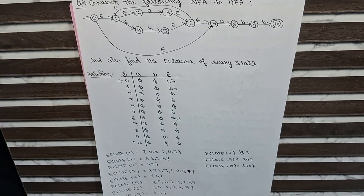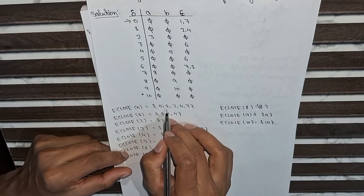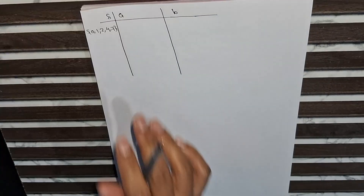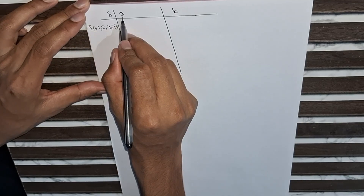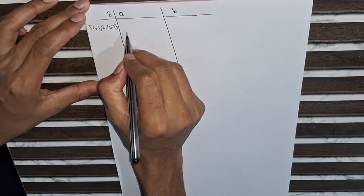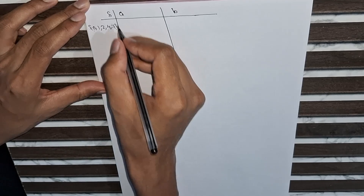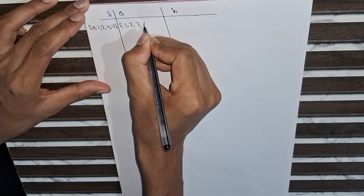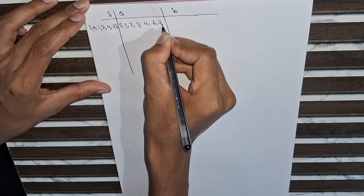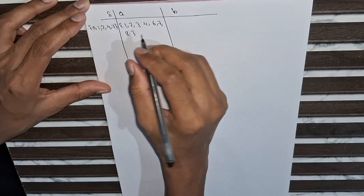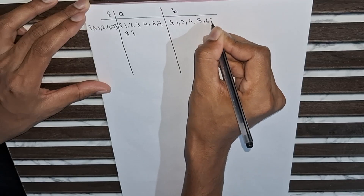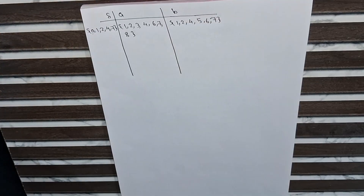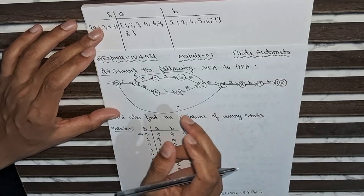We take e-closure of zero as the starting point for the DFA. The starting set is zero, one, two, four, seven. With input symbol a, we check which states are accessible — it gives one, two, three, four, six, seven, eight. With input symbol b we check, and it gives one, two, four, five, six, seven.